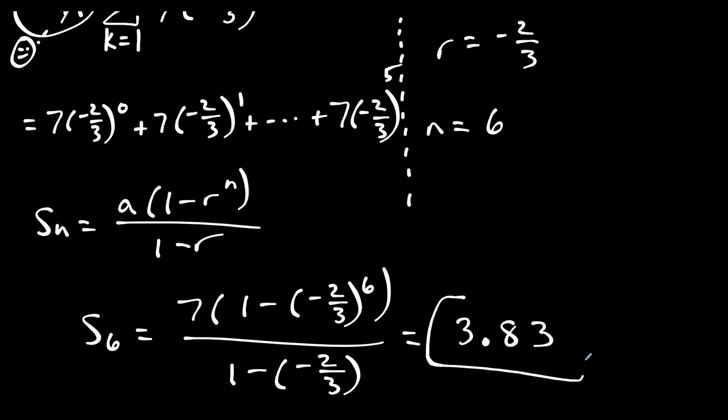So 3.83 is the partial sum for question 3. This concludes the video on partial sums of a geometric sequence. If this video was helpful, please like and subscribe — it really helps me grow the channel. Leave any topic requests in the comments below, and thanks for watching.